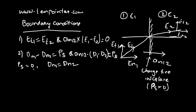In an examination, if asked to find the relation between Dn1 and Dn2, first use Dn1 minus Dn2 = ρs. Only when ρs = 0 does Dn1 equal Dn2. When solving boundary condition problems and the type of interface is not specified, assume ρs = 0, meaning Dn1 = Dn2. If an explicit value of ρs is given, then use Dn1 minus Dn2 = ρs.